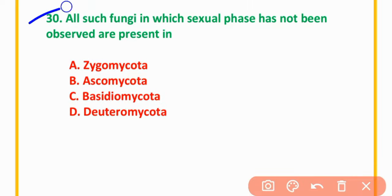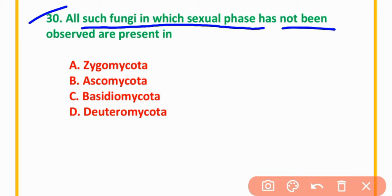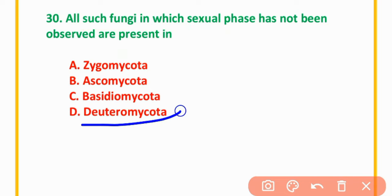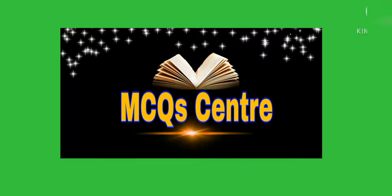MCQ Number 30: All such fungi in which the sexual phase has not been observed are known as — Zygomycota, Ascomycota, Basidiomycota, or Deuteromycota. The correct option is option D: Deuteromycota.